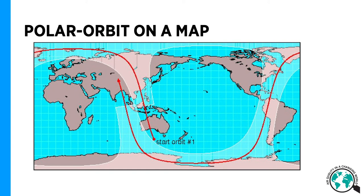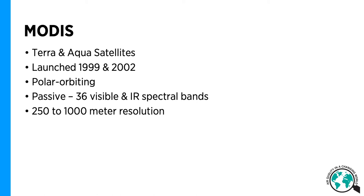Now let's take a look at how satellites can be used to measure air quality. The first and probably most common is MODIS, which stands for the Moderate Resolution Imaging Spectroradiometer. There are two identical MODIS instruments — one is on NASA's Terra satellite, and the other is on NASA's Aqua satellite. They were launched in 1999 and 2002 respectively. They're polar orbiting satellites and they're passive, which means they observe visible and infrared bands. In total, it has 36 bands, and the spatial resolution on the ground is between 250 and 1,000 meters, which varies depending on the bands.